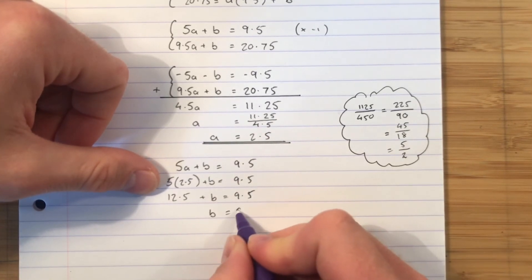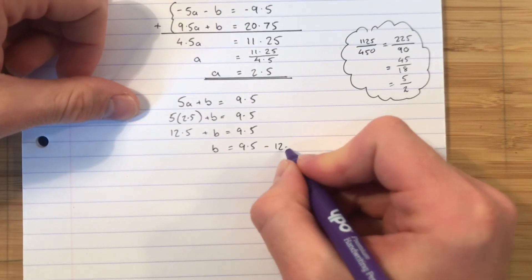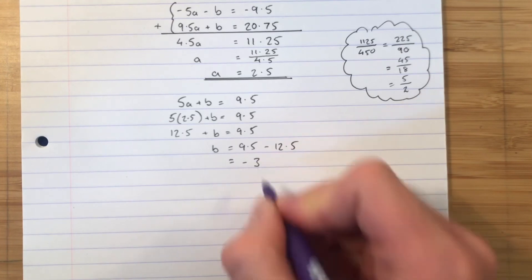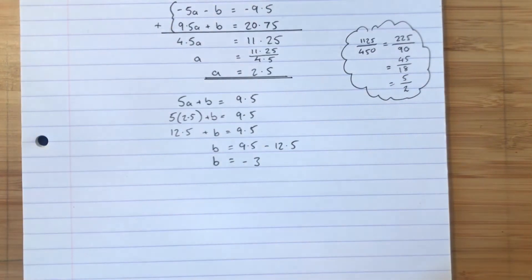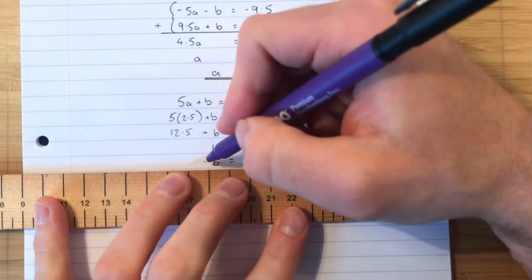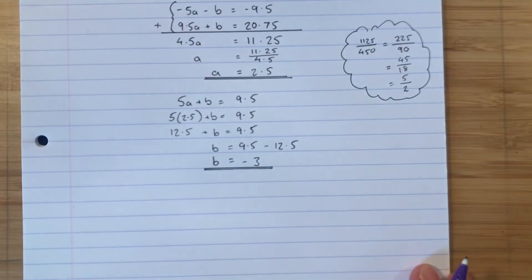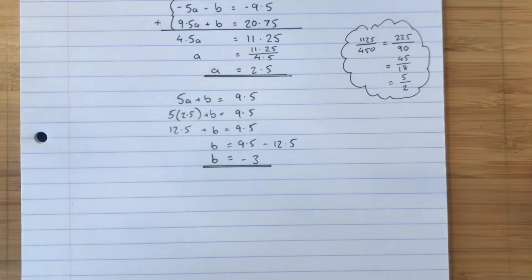So B is going to be 9.5 subtract 12.5, which will be negative 3. So the value of B is negative 3. So because I double underlined them, these two answers should be nice and clear. A is 2.5. B is negative 3.